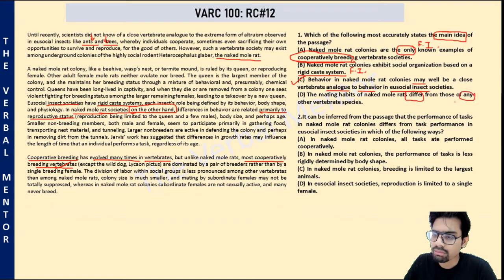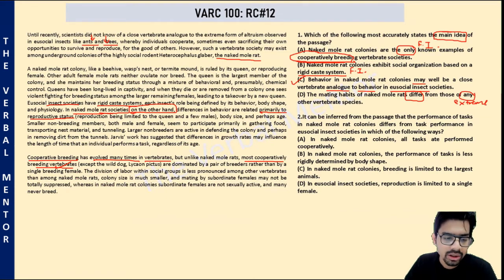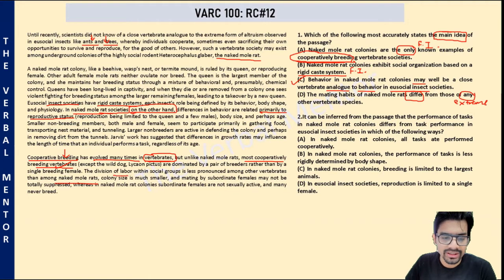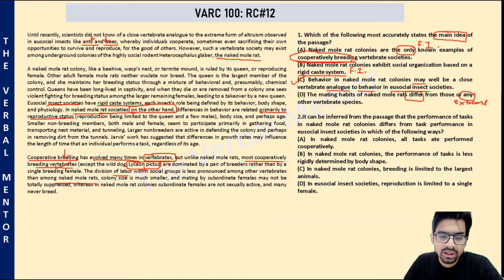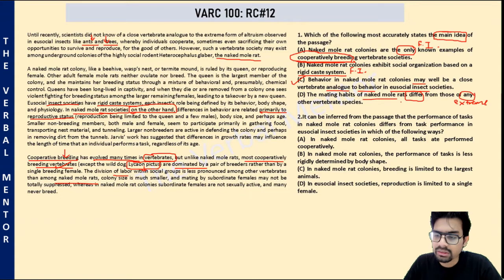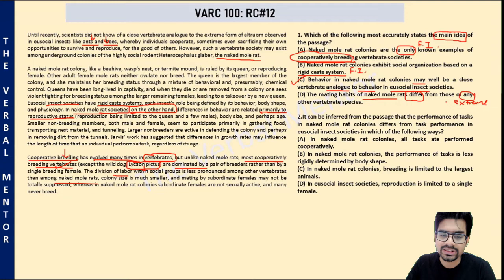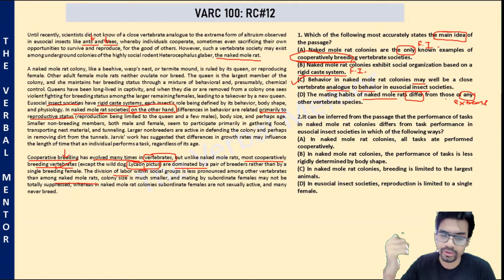Option C: behavior in the naked mole rat colonies may well be a close vertebrate analog to behavior in eusocial insect societies. Absolutely correct — that's the theme of discussion and the central main idea. Their altruistic, charitable behavior may be parallel to that displayed by eusocial insects such as ants and bees. Option D: the mating habits of naked mole rats differ from those of any other vertebrate species. This is an extreme statement — there are some points of similarity between other cooperatively breeding vertebrates and naked mole rats, so this cannot be correct. Also, the point of focus is similarities between naked mole rats and eusocial insects, not differences from other vertebrates. Correct answer is C.